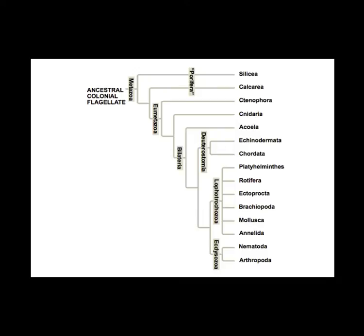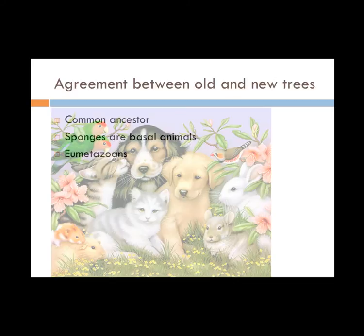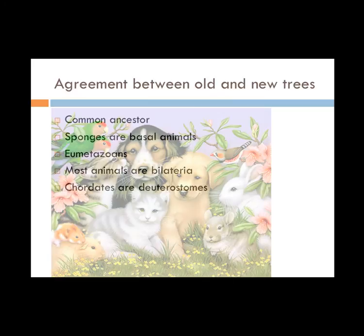This phylogenetic tree is a new one based on SSU RNA sequences, which are small subunit RNA found in ribosomes. Modern systematics has not reinforced the traditional tree, but the two trees agree in the following ways: all animals share a common ancestor and are in the metazoa clade; sponges are basal animals that lack true tissues and are monophyletic; the eumetazoans have true tissues and are true animals; and most animals are bilateral, with bilateral symmetry and three germ layers, and chordates are part of the deuterostome clade.